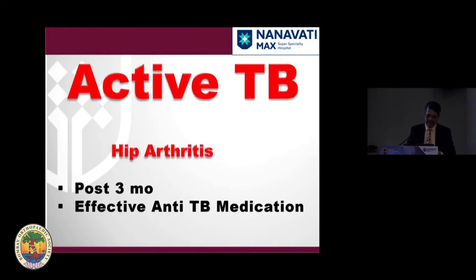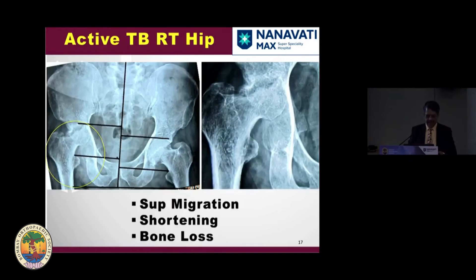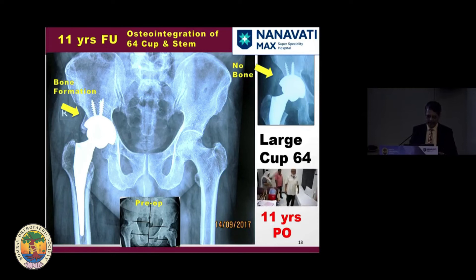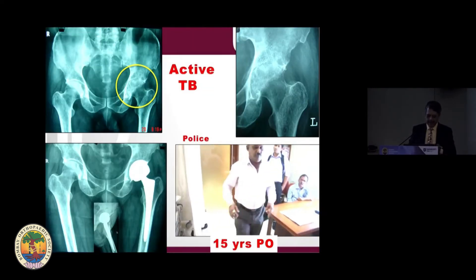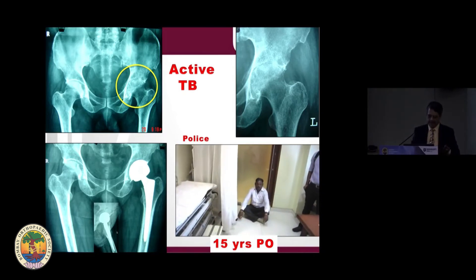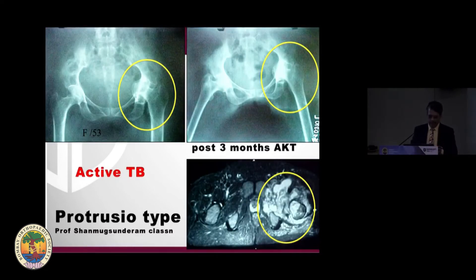For active TB, the most important step is three months of effective anti-TB medication pre-operatively. Here is a classic TB case showing classical destruction. After good pre-operative preparation and good response, we selected the case and performed THR. At 11 years follow-up, he is enjoying walking. One more case — a policeman, just as active as before. After 15 years of active TB he had been bedridden with protrusio, proven on MRI as classical active TB.